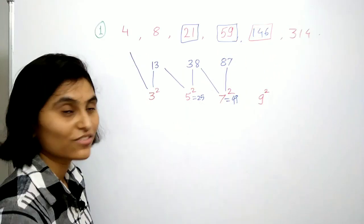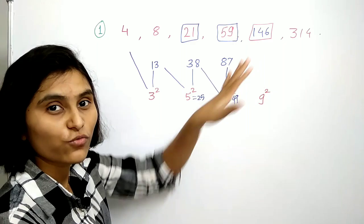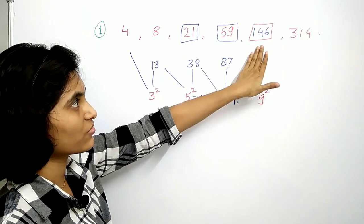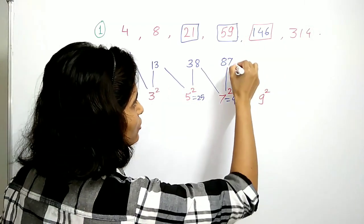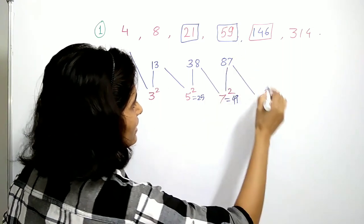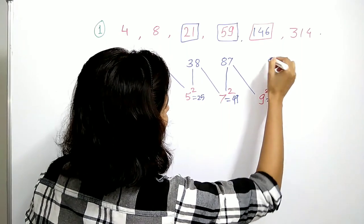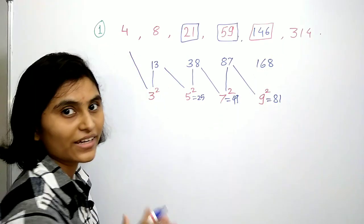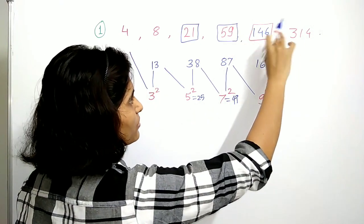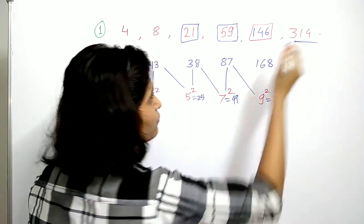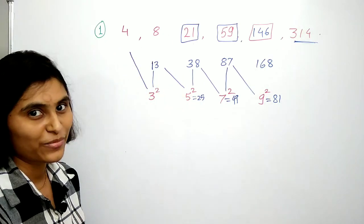146 is the missing number. Now to check this number is correct or not, just take the addition of these two numbers, which is 87 plus 81, which gives us 168. Now you add these two numbers, we will get 314. So this is correct.